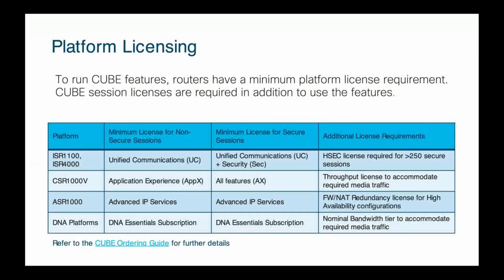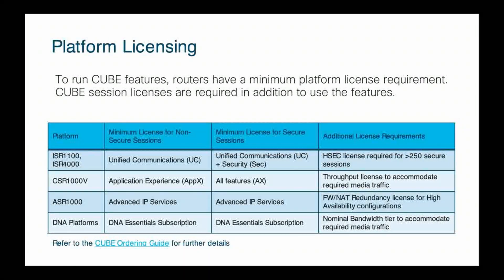Finally, that Catalyst 8000 series platform license — the DNA platform. An Essential subscription is needed in both secure and unsecure scenarios. Keep in mind with this platform, you do need to ensure that the proper bandwidth tier is licensed to capture the throughput.